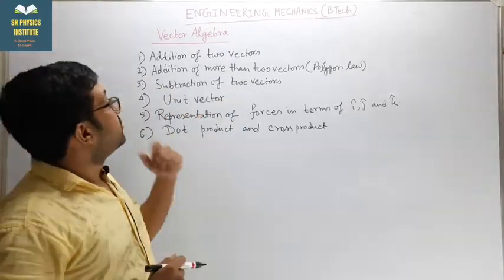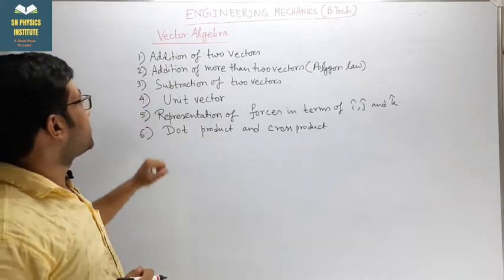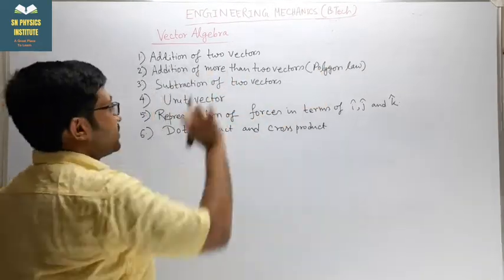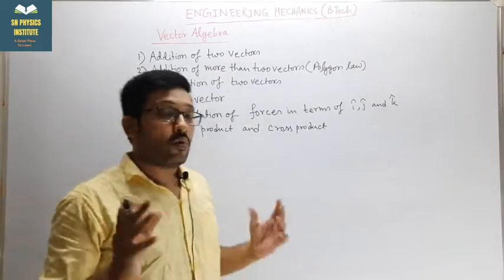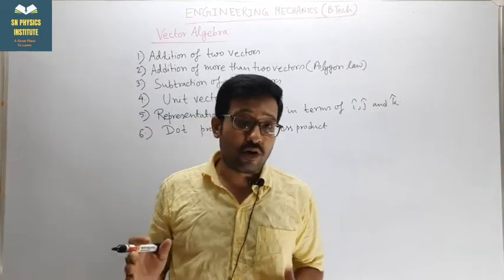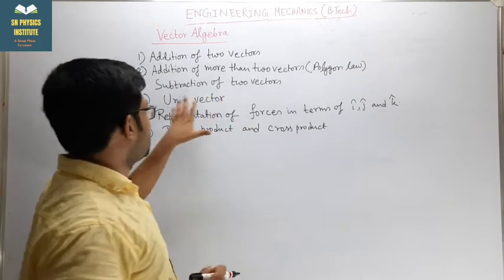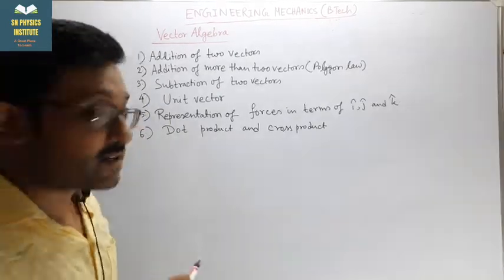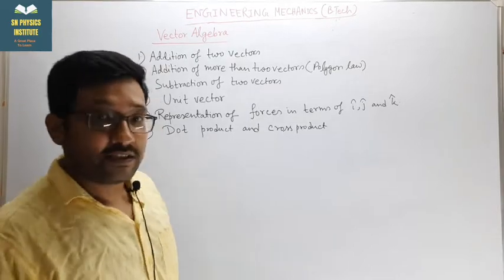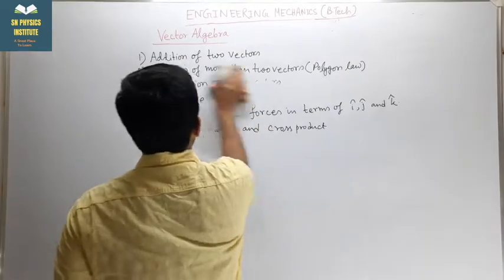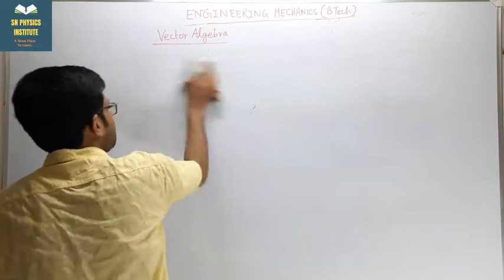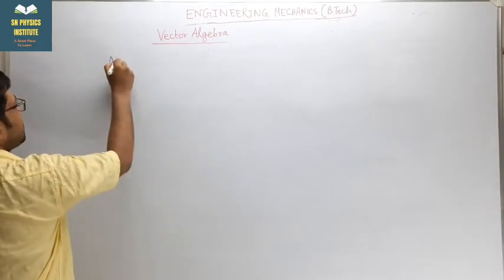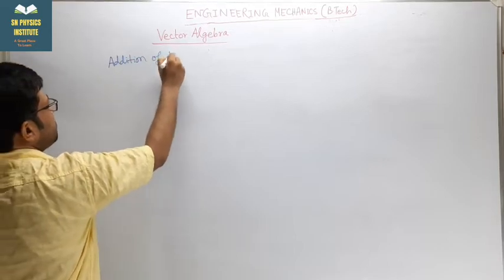Today I am starting vector algebra. In this vector algebra, the topics are: addition of two vectors, addition of more than two vectors using the polygon law, the triangle law of vector addition and parallelogram law of vector addition. Next, subtraction of two vectors, unit vector, representation of forces in terms of i, j and k, dot product and cross product. So let's start the addition of two vectors — you already read these things at the class 11th level, so this is just for revision.